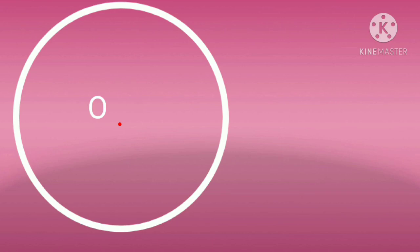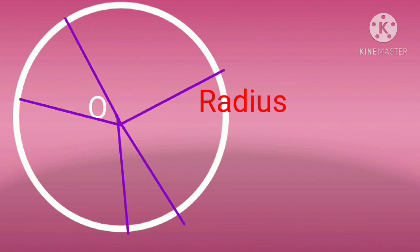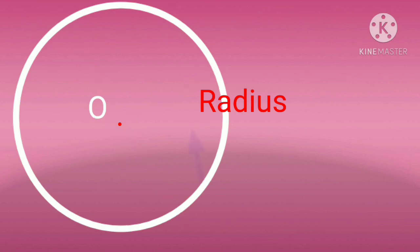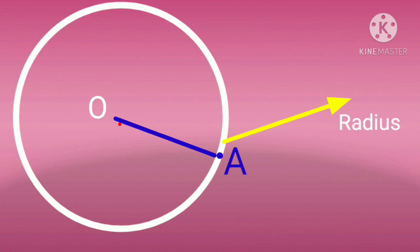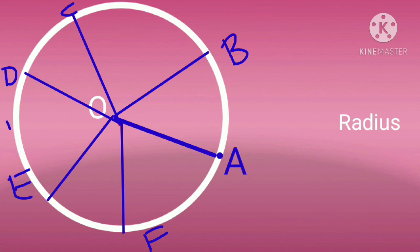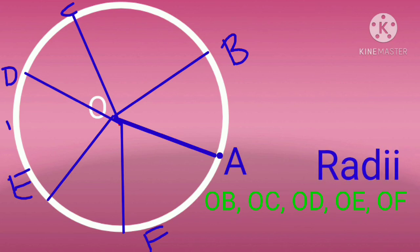In this circle, O is the center of the circle. The line segment connecting from the center of the circle to any point on the circle is called the radius. In this circle, O is the center and point A is on the circle, so OA is called the radius. We can draw many radii in a circle — OB, OC, OD are also radii of the circle.